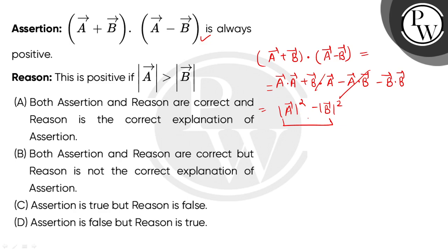So this quantity can be positive or negative, not always positive. Therefore, the assertion is false. The reason states this is positive if |A| > |B|, which is correct.